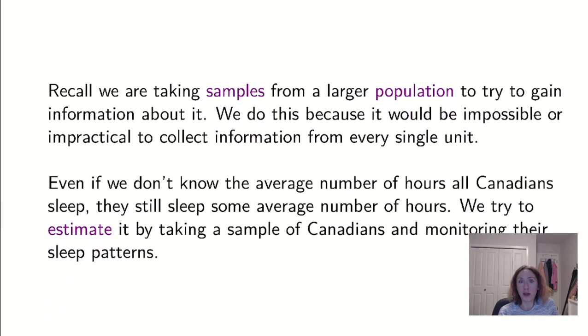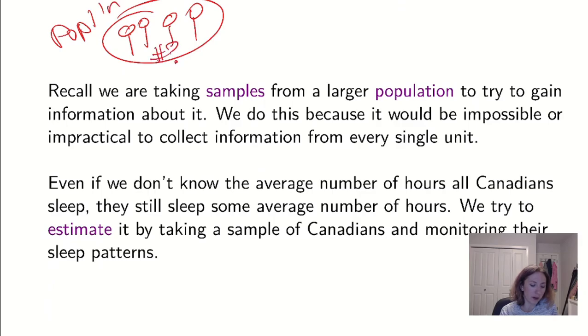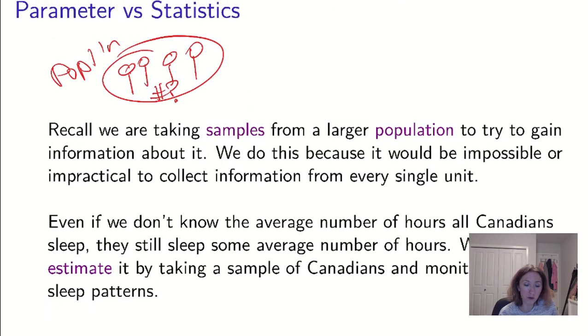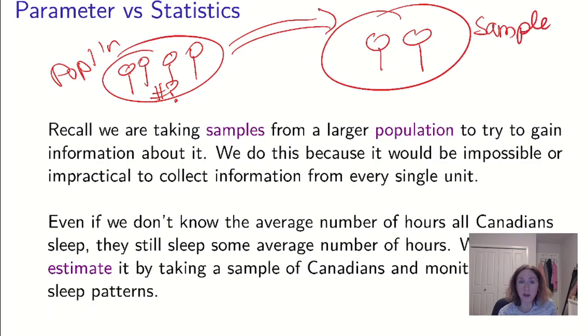So remember what we're doing in stats. We're trying to take samples from a larger population to try and get information about it. We have a population that has a lot of things or people in it, and we want to know about a number in this population. But I can't ask every single person, so I need to make do somehow else. So what I can do is take a sample of people. This has fewer people, and I hope that if I pick a random sample and get a nice representative sample, the number I'm going to get here is going to tell me about this number here.